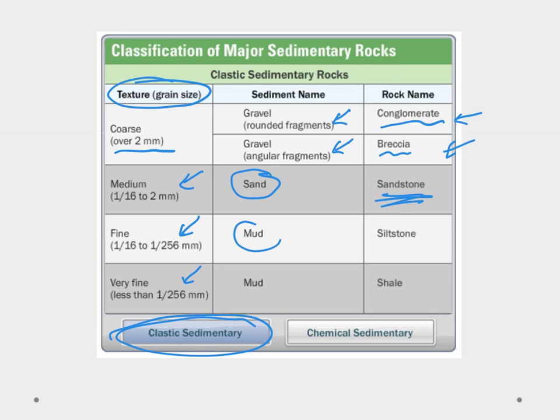We can have fine which is found in mud and that's going to be siltstone, and then we can have this very fine down here which is how we make our shale. So these are going to be broken up bits of rock, that's what forms the sediment. The size of the sediment is going to give us our texture. That's our clastic sedimentary rocks.